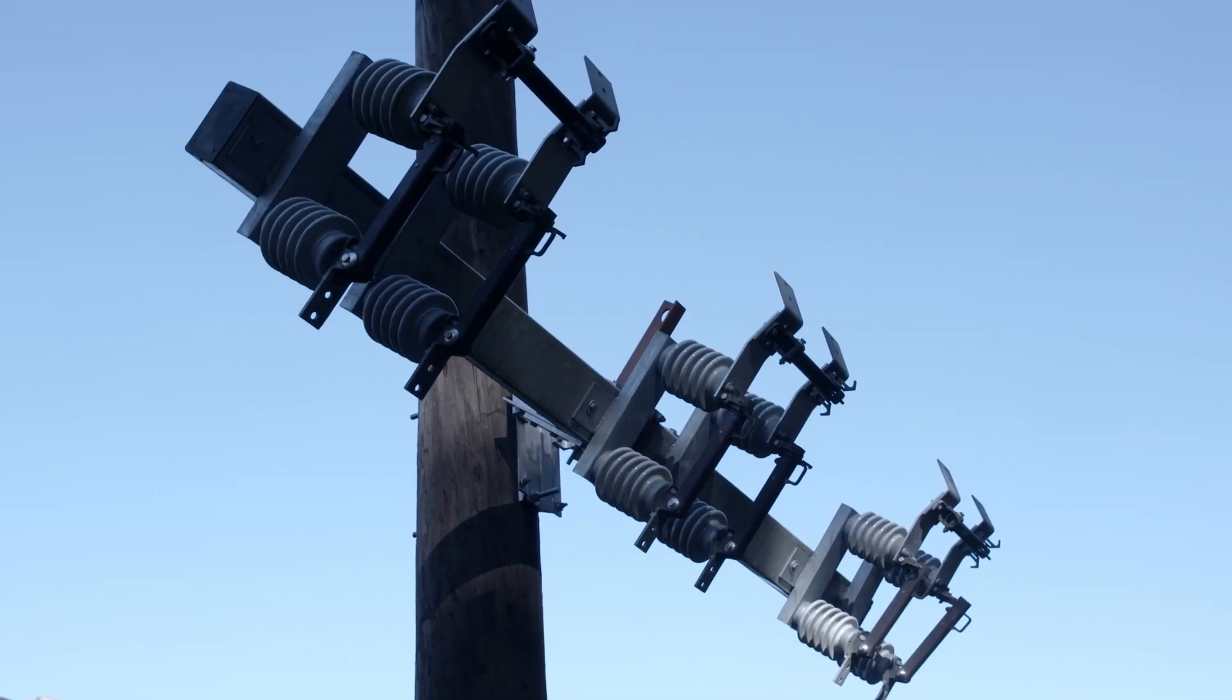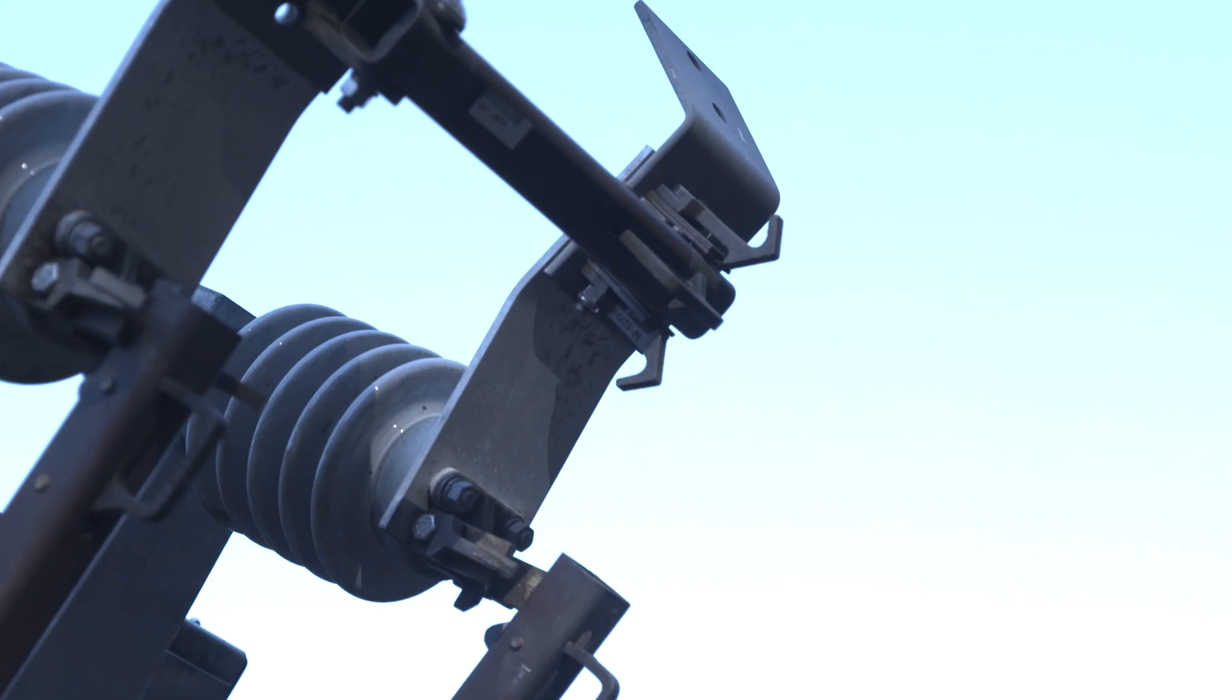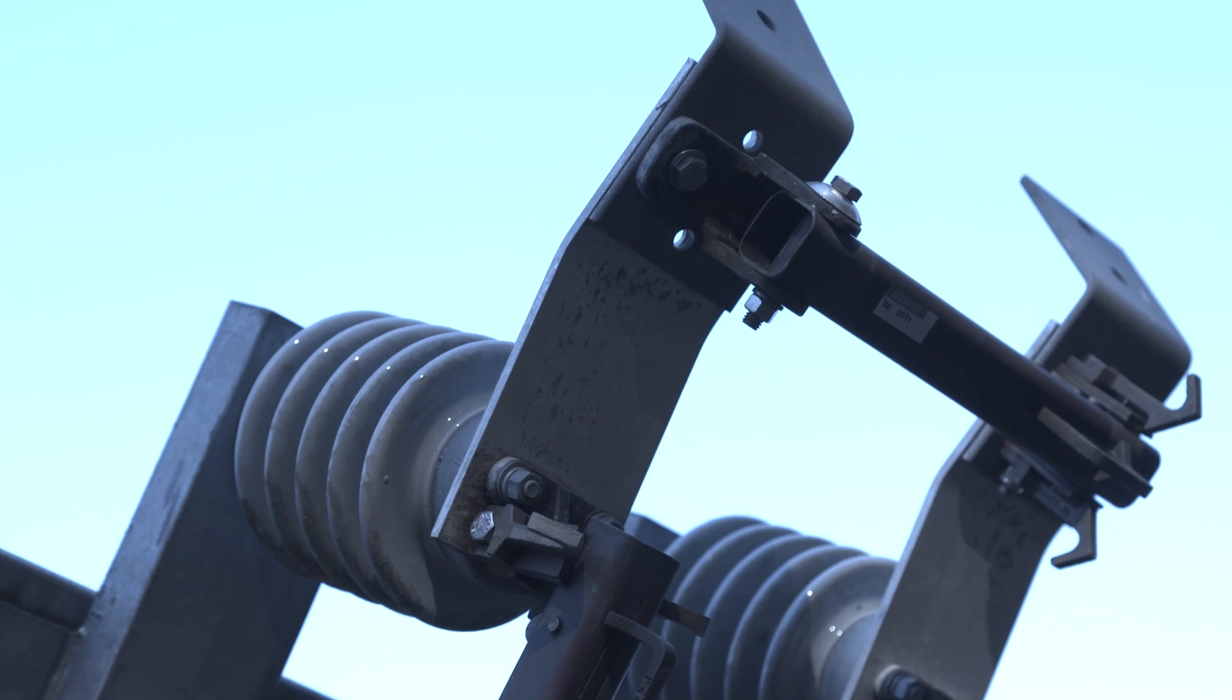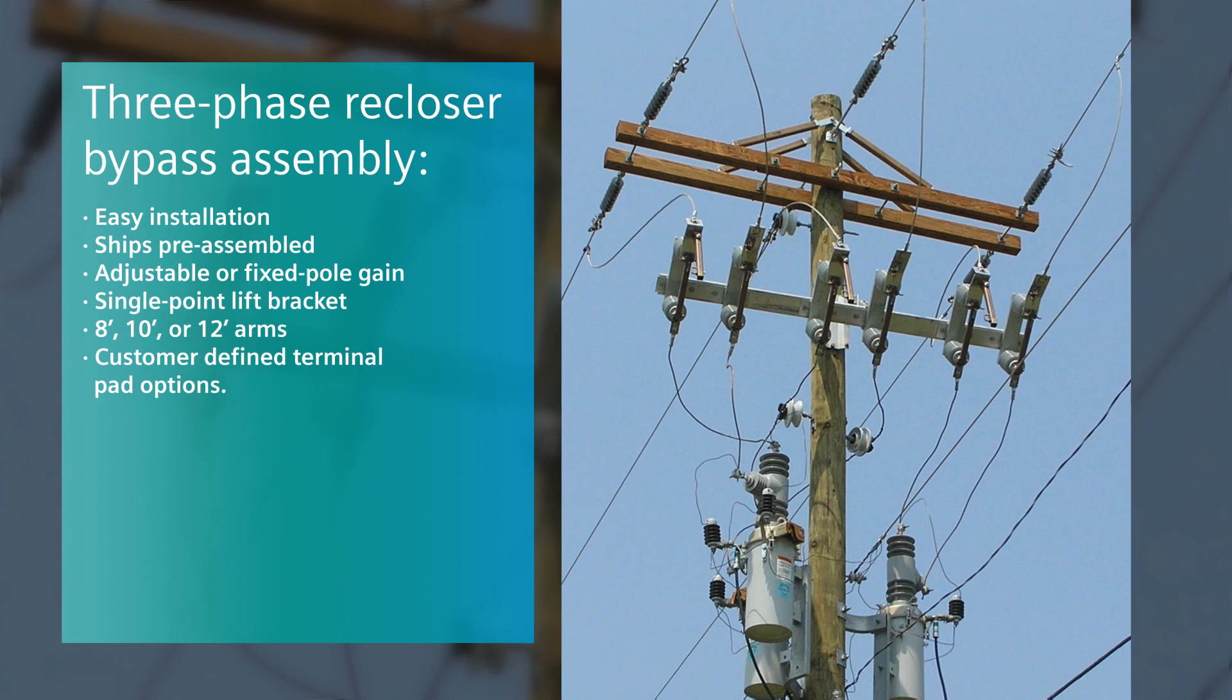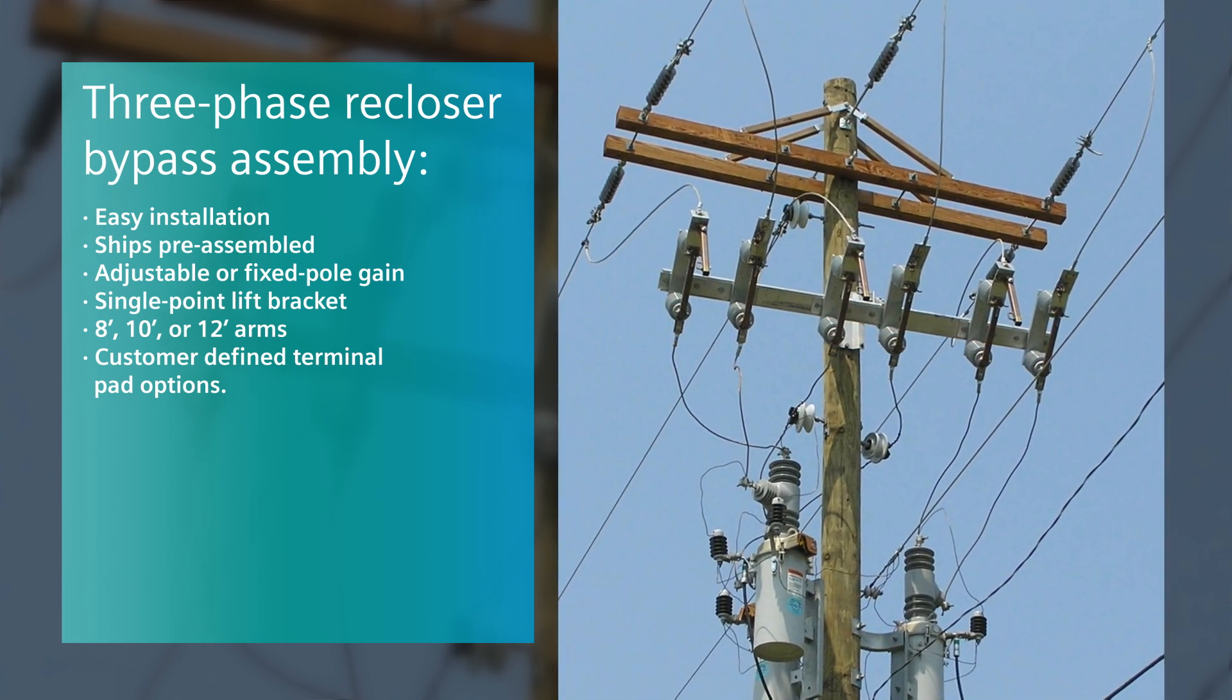Siemens also offers a three-phase pre-assembled recloser bypass assembly which makes installation easier and reduces installation time and labor costs. Quantities of up to three type B2 recloser bypass switches can ship pre-assembled on a fiberglass or galvanized cross arm.